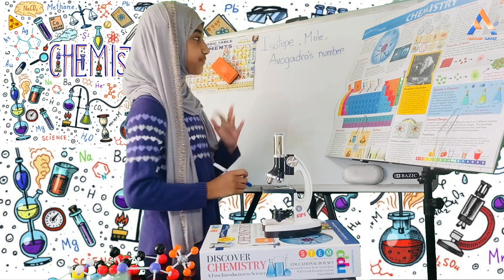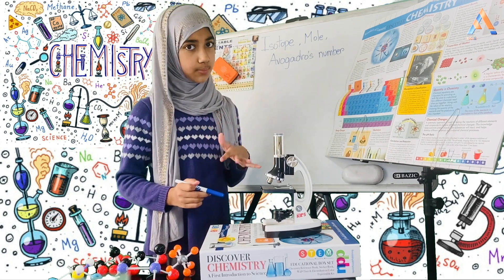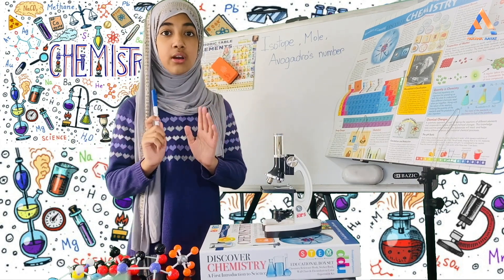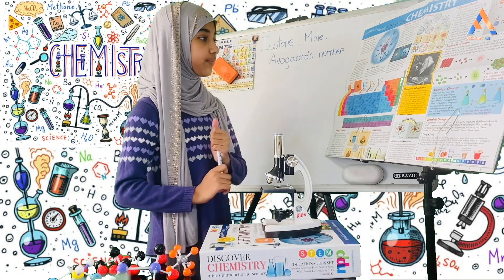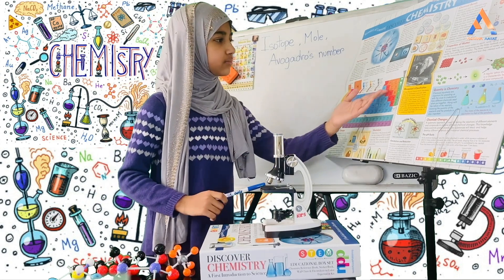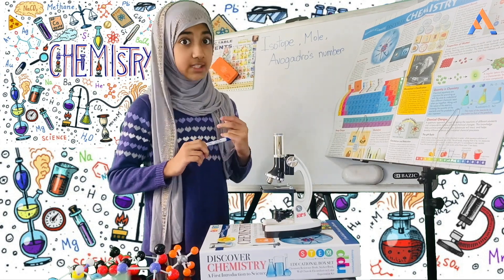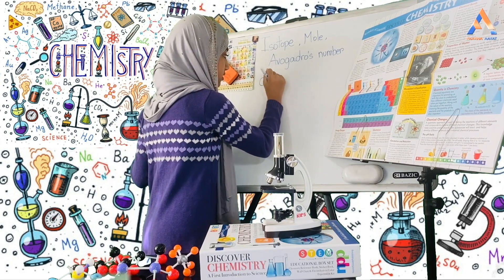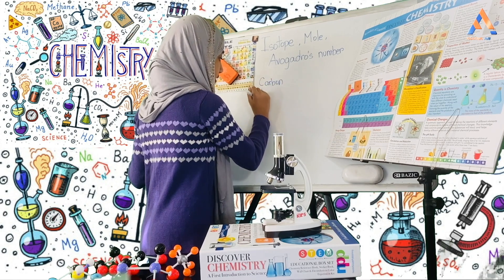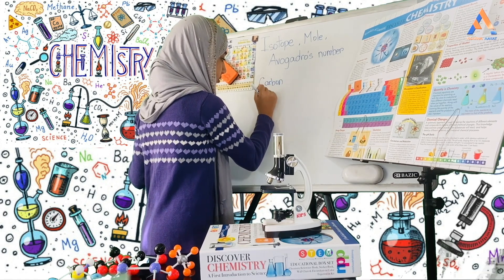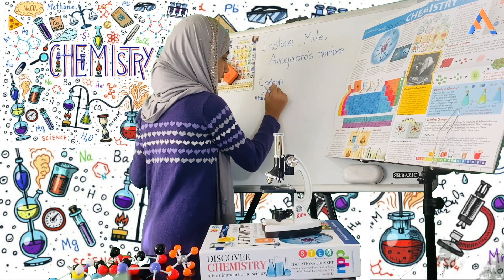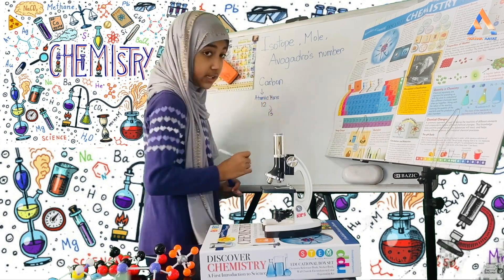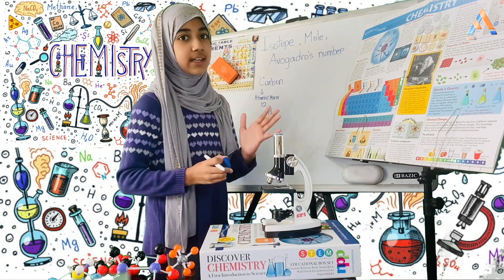I'll start with the isotope. The isotope has a very simple meaning — it means that there can be one or more types of an element. For example, for carbon, usually the atomic mass is 12, but sometimes the atomic mass can also be 13. So for carbon, the atomic mass is 12, but sometimes it can also be 13. This is basically an isotope.